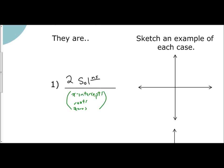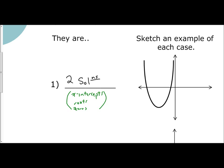If we want to look at an example of this on a graph, having two solutions means I'm going to have two x-intercepts. My u-shaped parabola just has to intersect the x-axis at two separate locations. The parabola comes down, crosses the x-axis — those crossing points are my x-intercepts, my zeros, my solutions. Then it comes back up and crosses the x-axis again at a second x-intercept. So the first case is two solutions, meaning two x-intercepts.